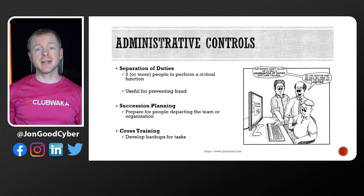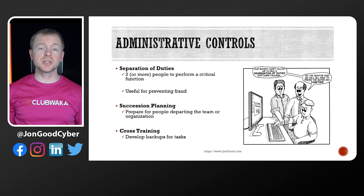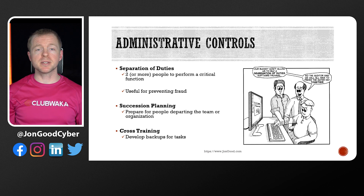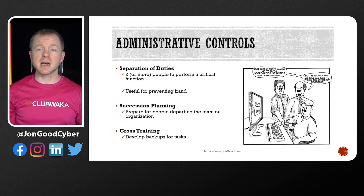Administrative controls cover a lot of areas, to include things like change control that identifies how we implement changes to our network, configuration management to track and approve changes to systems, and business continuity and disaster recovery planning so that we can plan for disasters.